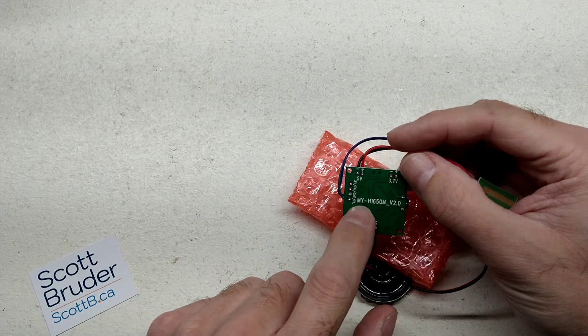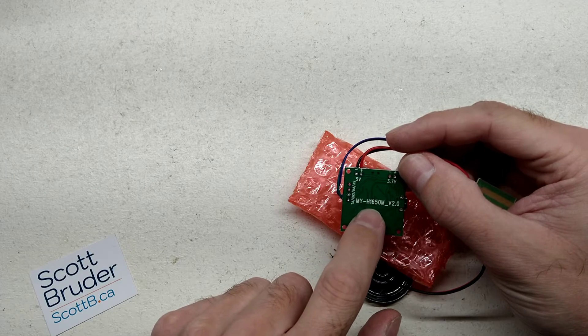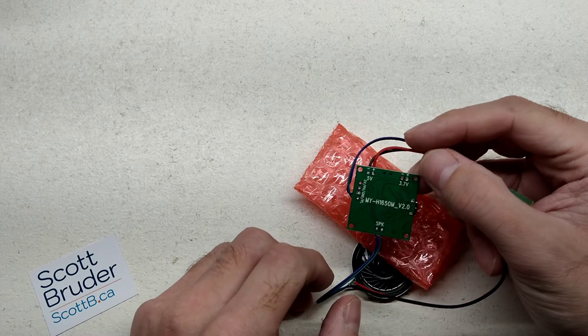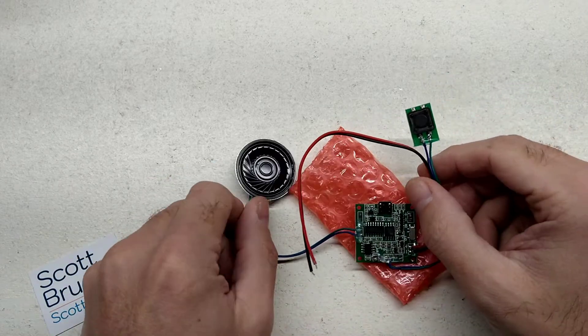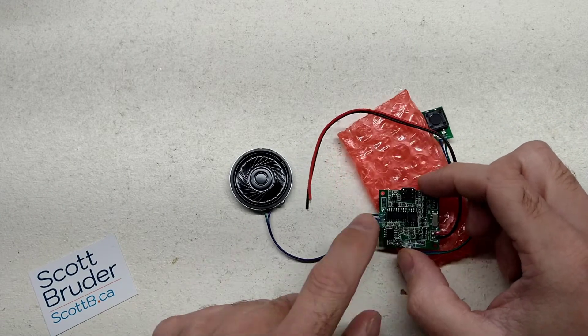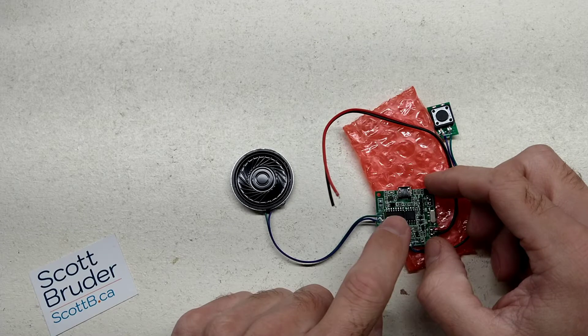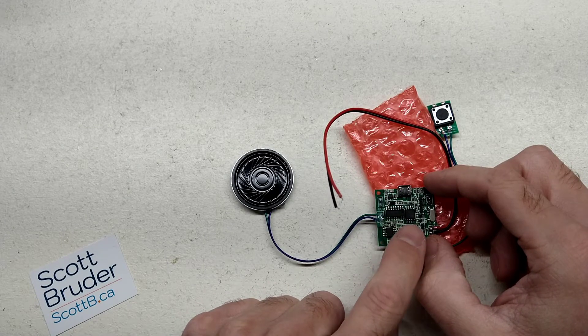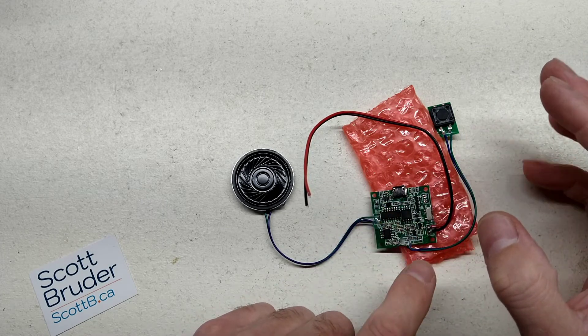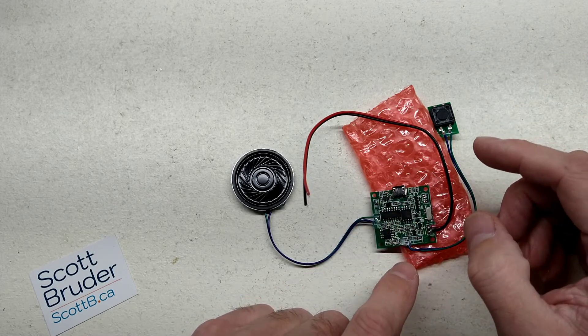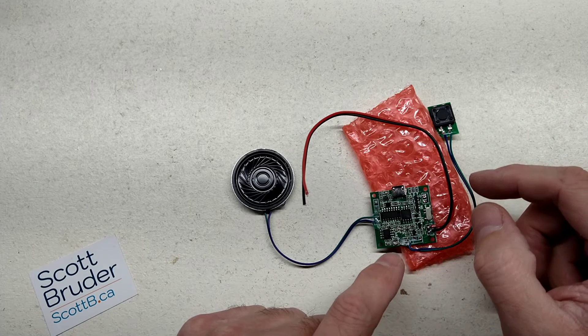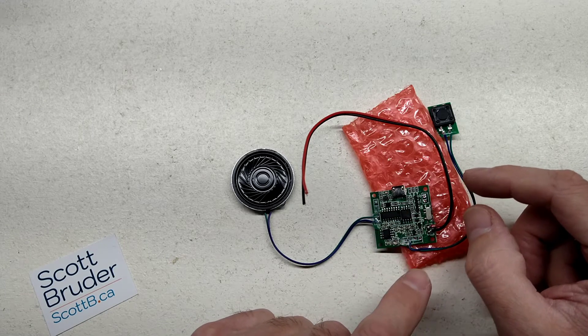So the board we've got here today is a my-h1650m underscore v 2.0. So this is version 2.0 of the board. This is a little board that I wanted to get my hands on because what you can do is copy an mp3 file of your choosing onto an 8 megabyte storage space. Now granted 8 megabytes isn't a lot of space but if you record your files properly you could get a half hour worth of music or even almost an hour worth of like talk, like an audiobook.